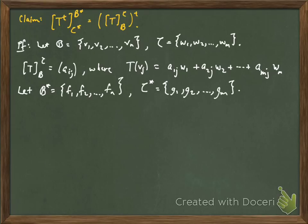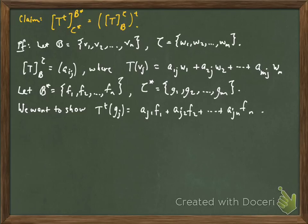And I have my coordinate functionals, B star is F1, F2 up to Fn, and C star is G1, G2 up to Gn. And we want to show that T transpose evaluated at Gj is exactly equal to Aij1 F1 plus Aij2 F2 plus up to Aijn Fn. And that'll prove our claim, because remember, the transpose of a matrix just swaps the roles of i and j in the entries, and so that's why I'm looking at this particular combination.